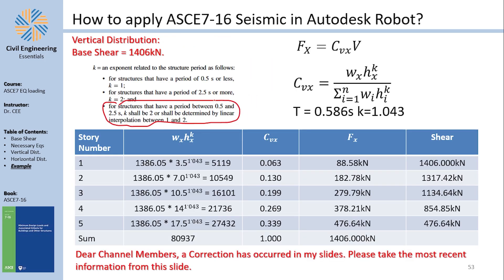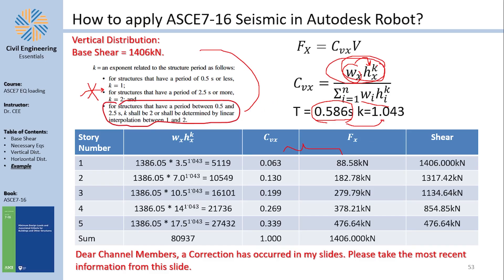Now we go to the vertical distribution. Channel members, please note: there is a correction in the slides. The teaching assistant assumed an incorrect value of k. Because the fundamental period is 0.586 seconds, k should be interpolated — so those values are slightly different from what's shown. I will keep repeating this warning. To find the vertical distribution I need w × h^k for each story divided by the sum of all stories, where k = 1.043 based on the fundamental period.